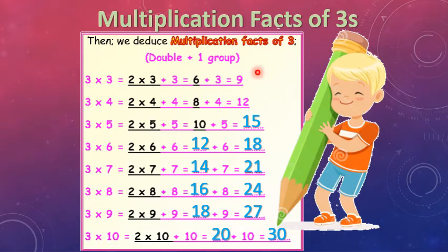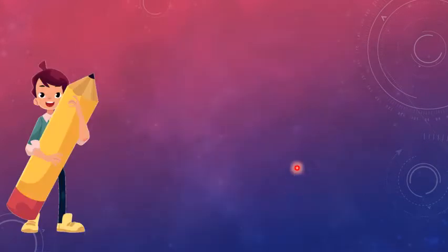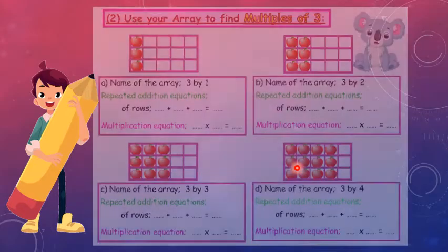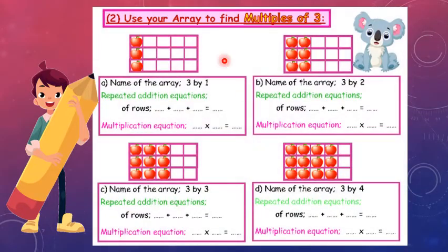Table 3: 9, 12, 15, 18, 21, 24, 27, and 30. Good job! Now let's go to use arrays to find multiples of 3.